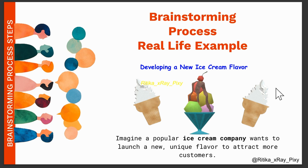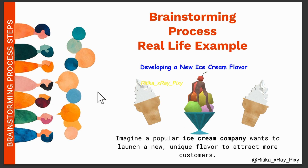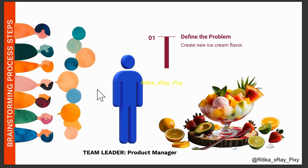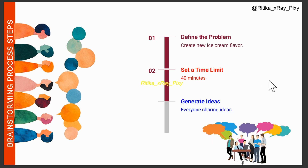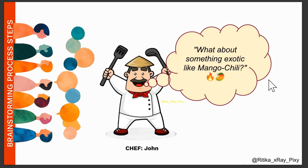Let's understand the brainstorming process using a real life example. Imagine we have a new ice cream company that wants to launch a new and unique flavor to attract more customers. Instead of depending on one person's decision, the company organizes a brainstorming session with their team. Step one: define the problem. The team leader starts by clearly stating the goal — we want to create an exciting new ice cream flavor that customers will love — and the team sets a time limit of 40 minutes for idea generation. Step two: generate ideas. Everyone shares ideas freely without any judgment or criticism.